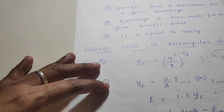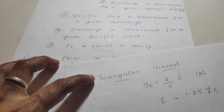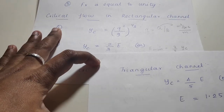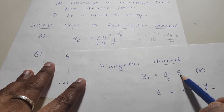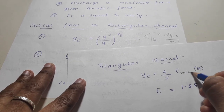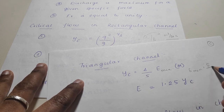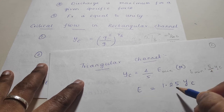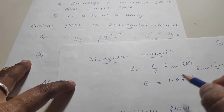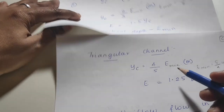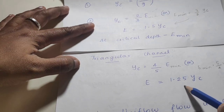For a triangular channel, the same concept applies but instead of 2/3 you use 4/5. So yc equals 4/5 of E minimum, or E minimum equals 5/4 yc, which is 1.25 yc. For a rectangular channel E minimum equals 1.5 yc, and for a triangular channel E minimum equals 1.25 yc.